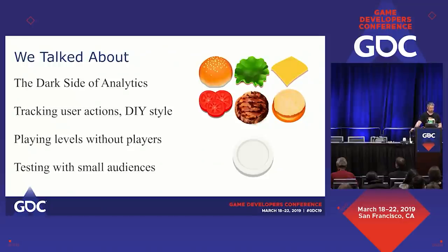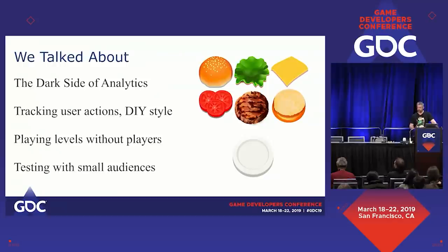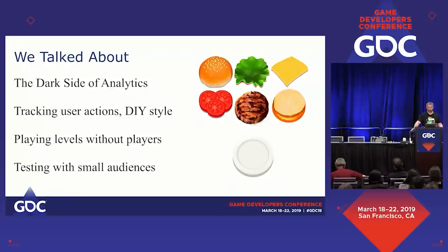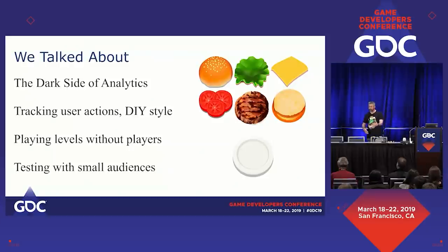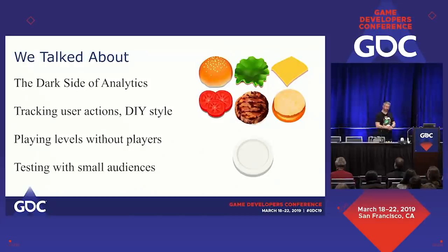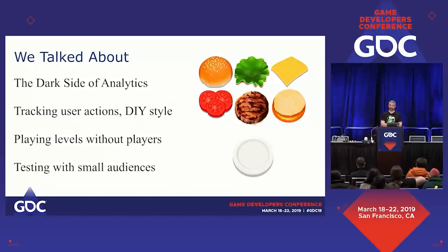So what did we talk about? The dark side of analytics — problems we had and things we could have done differently. Be disciplined: when you apply data, make sure there's an answer someone is waiting for, that you're changing a process in how games are made. We talked about tracking user actions and the benefits of letting games do it independently — empowering product teams to run at their own pace removes major bottlenecks. Playing levels without players — using AI simulation to solve a design problem. And tips for applying A/B testing to small studios, small audiences, and small features.